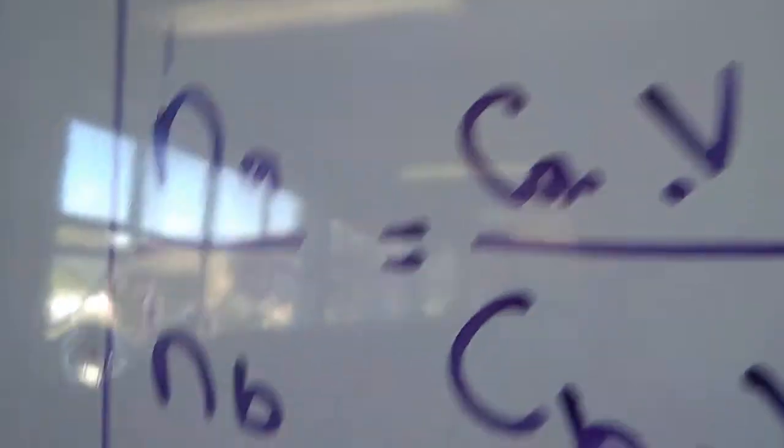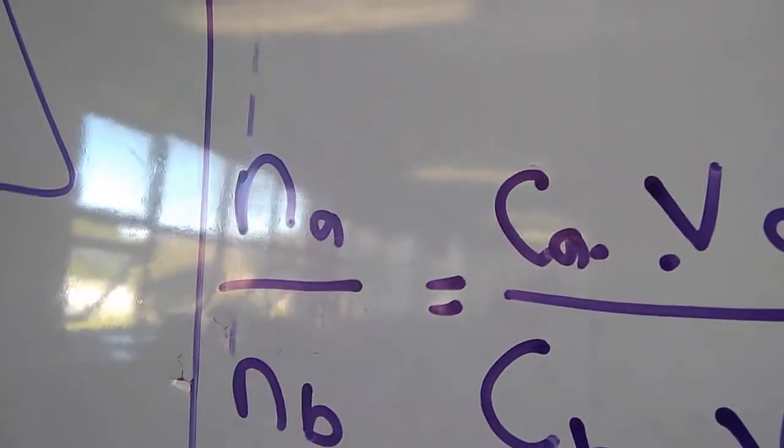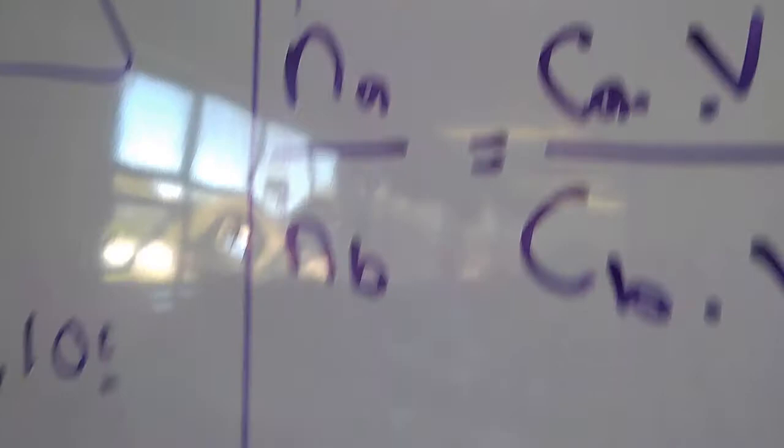Here's the formula. Number of moles acid over number of moles base equals concentration times volume of acid over concentration of base times volume of base. That's your formula. You've got to work it out. Now what are we trying to find here? Are we trying to find the concentration of the acid or the base?